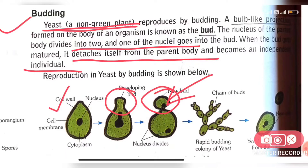In the budding process, the nucleus is divided into two — one stays in the parent body and one goes to the bud. This is the budding process.